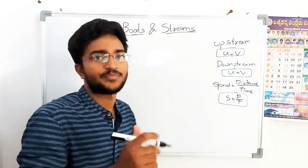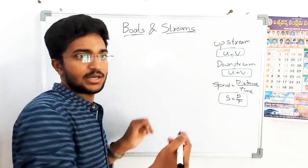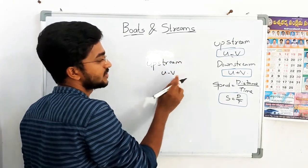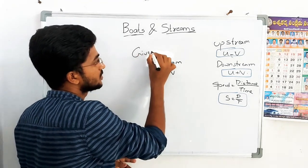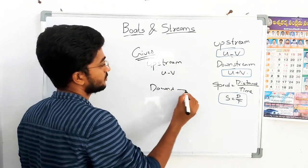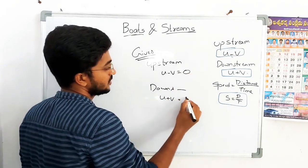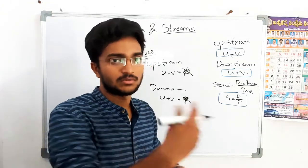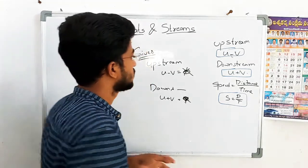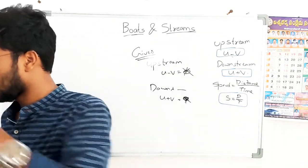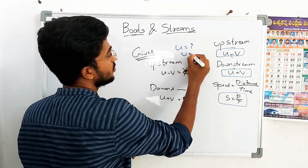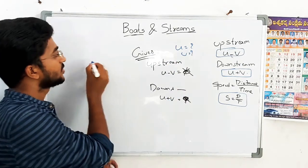A practical application of this topic is river rafting. So the first question type is: what is upstream speed and downstream speed? Upstream speed is U minus V, and downstream speed is U plus V. Some given values are used to find the speed of the boat and the speed of the stream.